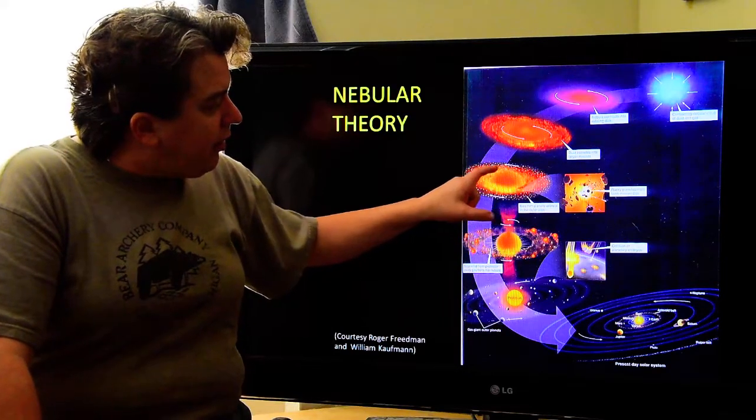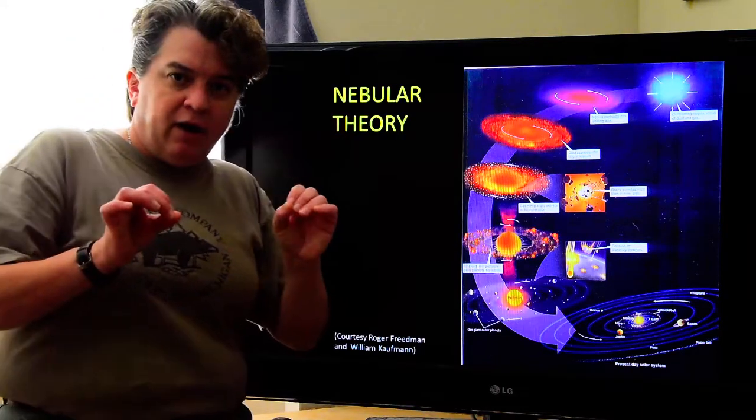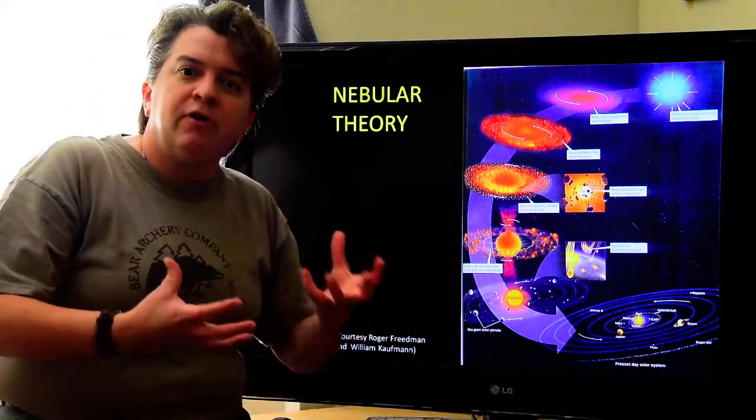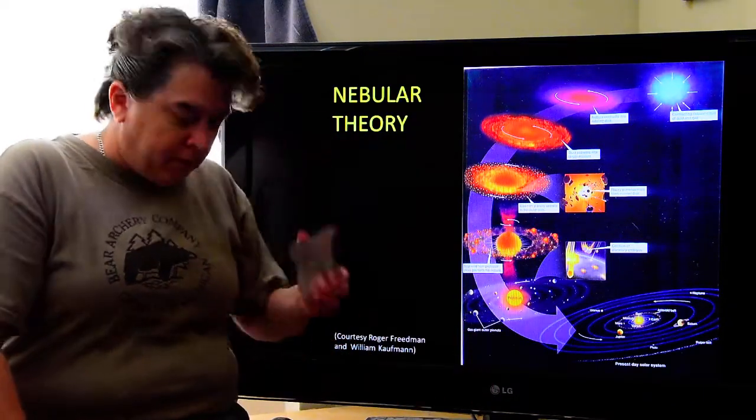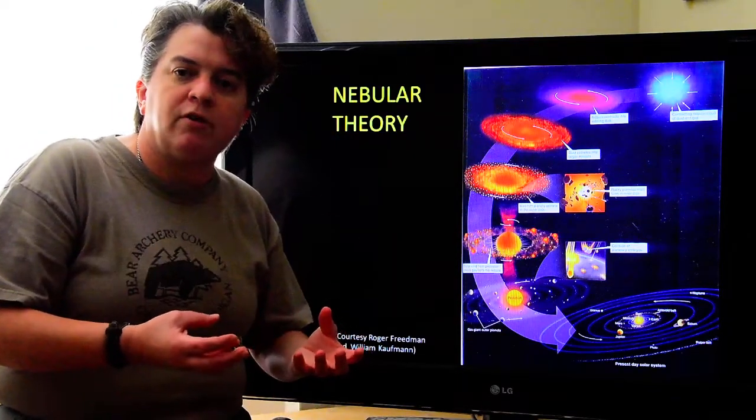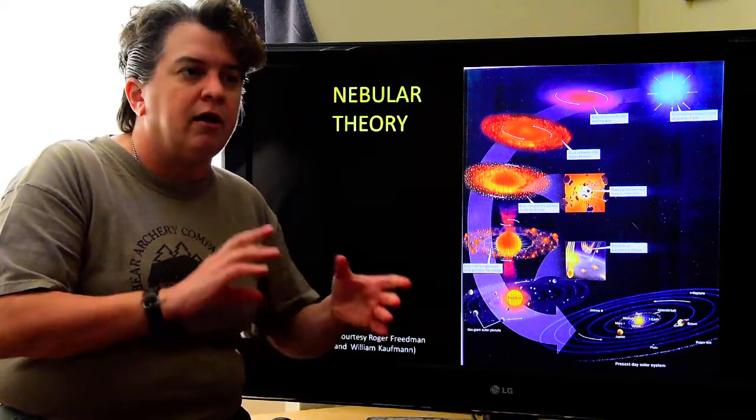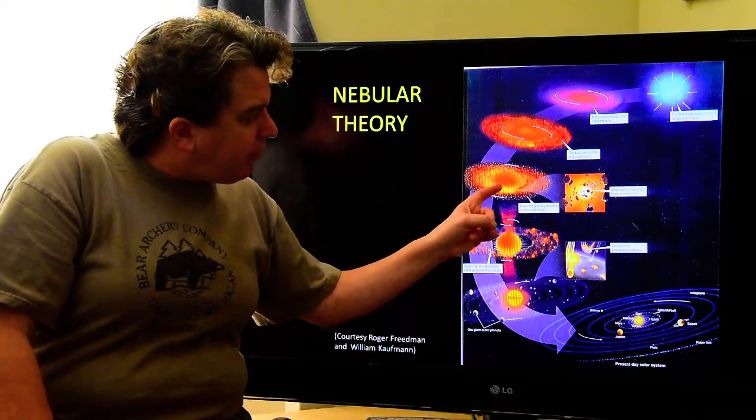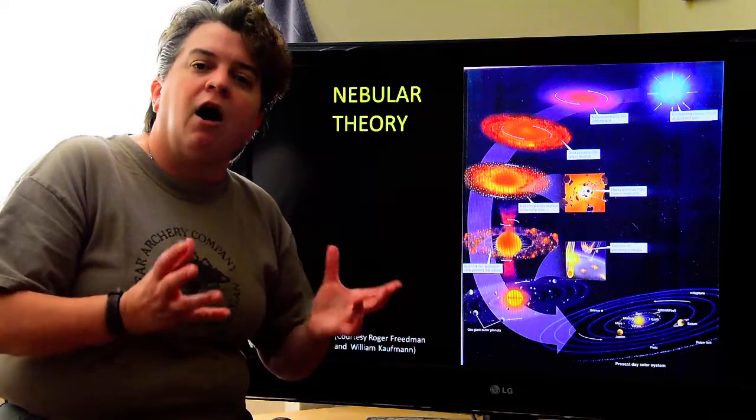So, in here, close to that really hot center, we start having all kinds of different rocky material accumulating. Rocky material like this stuff, right? It's going to be things that have a high melting point, like iron and silicate minerals and feldspars and stuff like that. Why do those tend to accumulate towards the center?